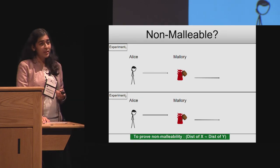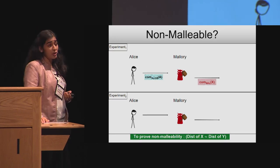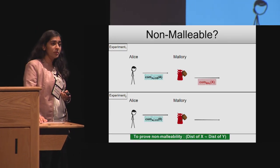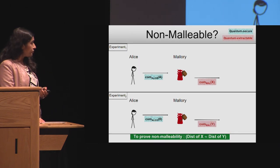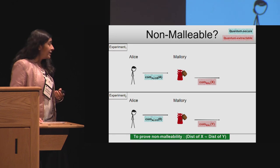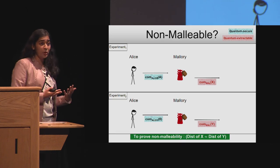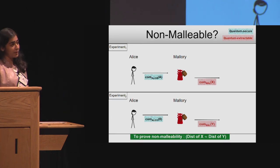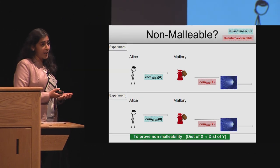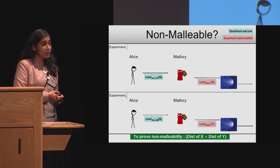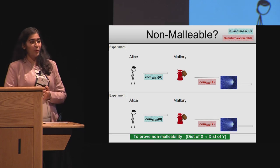To answer this question, recall that we need to go back to the game with two experiments and argue that the distribution of x in experiment one is indistinguishable from the distribution of y in experiment two when Alice just commits to zero. Looking at these experiments, if one takes the transcript of an execution of either experiment, given a quantum computer, it's possible to find out what x and y are. The reason is that we started with commitments for Mallory that were extractable in quantum polynomial time.